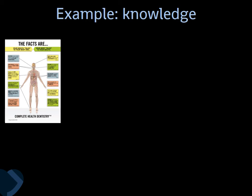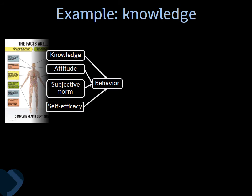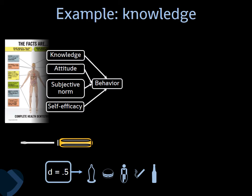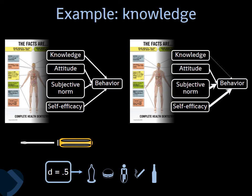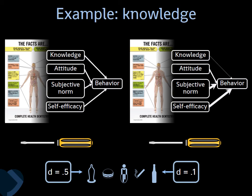For example, in an intervention to increase knowledge about complete health dentistry, if knowledge, attitude, subjective norm, and self-efficacy are all roughly equally important predictors, applying a method targeting knowledge yields an effect size of 0.5. But in a different subpopulation where knowledge is not important and self-efficacy is the real problem, using the same knowledge-targeting method yields a much lower effect size. So any behavior change method can only work if it targets determinants and beliefs that actually predict the behavior, if the method is able to target those determinants, and if you apply the parameters for effectiveness properly.